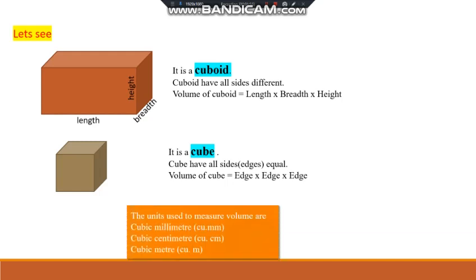The units of volume are cubic millimeter, cubic centimeter, and cubic meter. When dimensions are given in millimeter, use cubic millimeter; when given in centimeter, use cubic centimeter; and when dimensions are given in meter, then use cubic meter as the unit of volume.